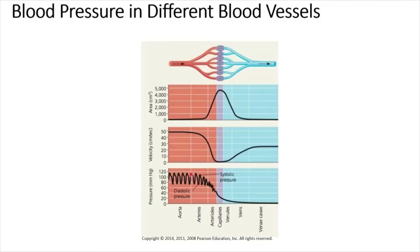Blood pressure is highest within the aorta because the aorta is connected directly to the ventricle of the heart. In the aorta, total cross-sectional area is low and blood flow velocity is high.